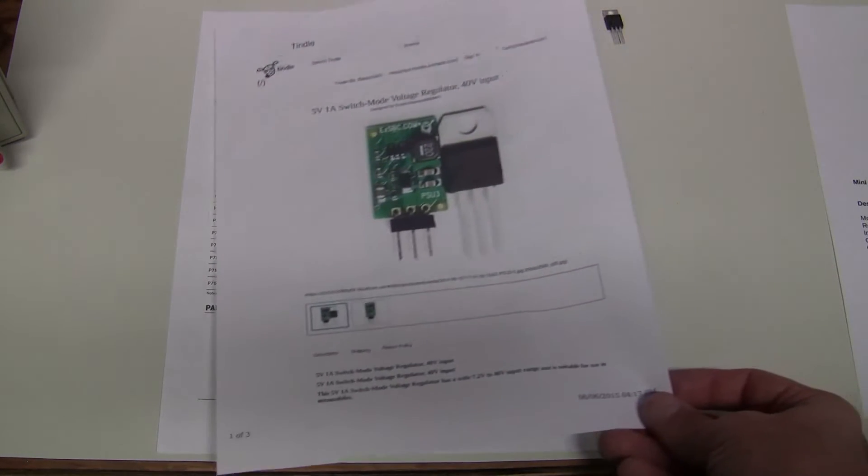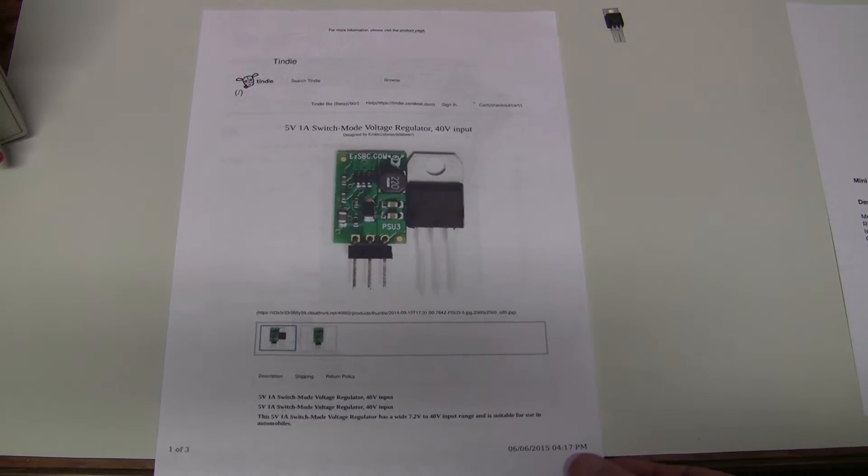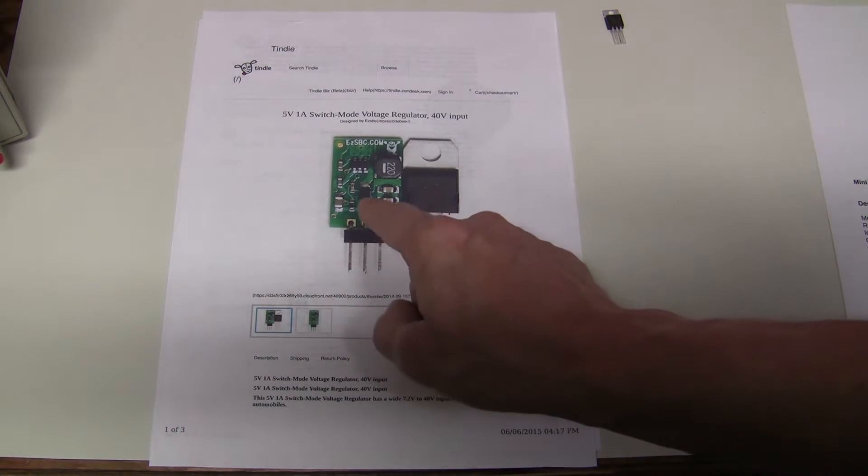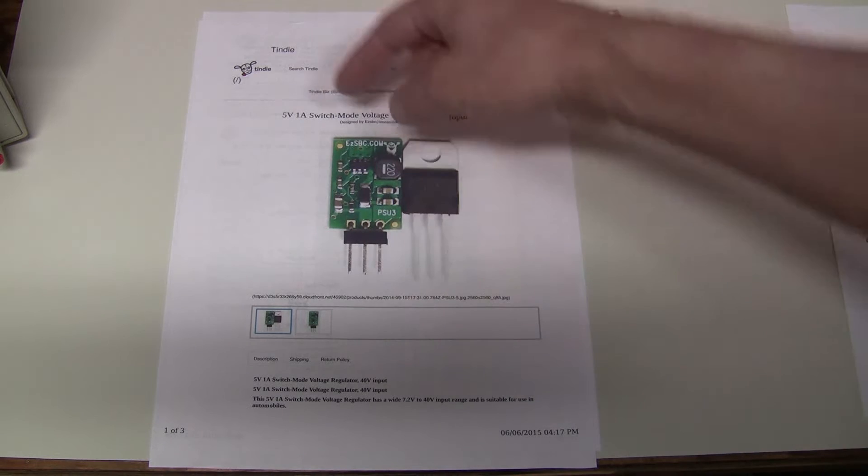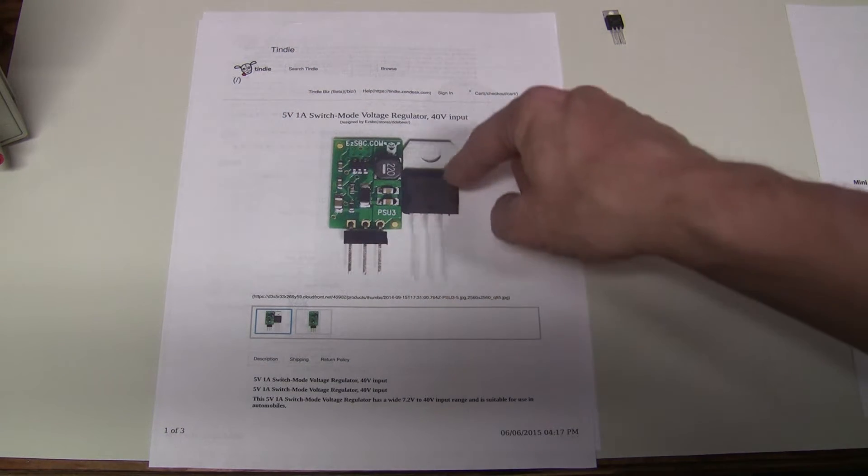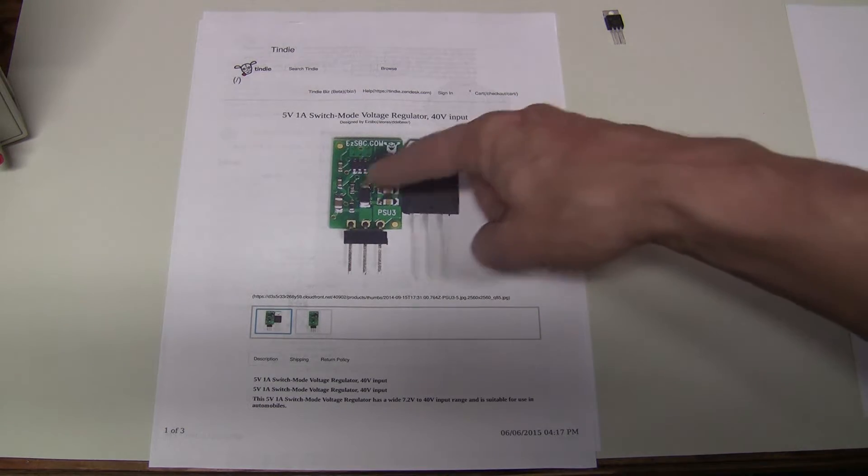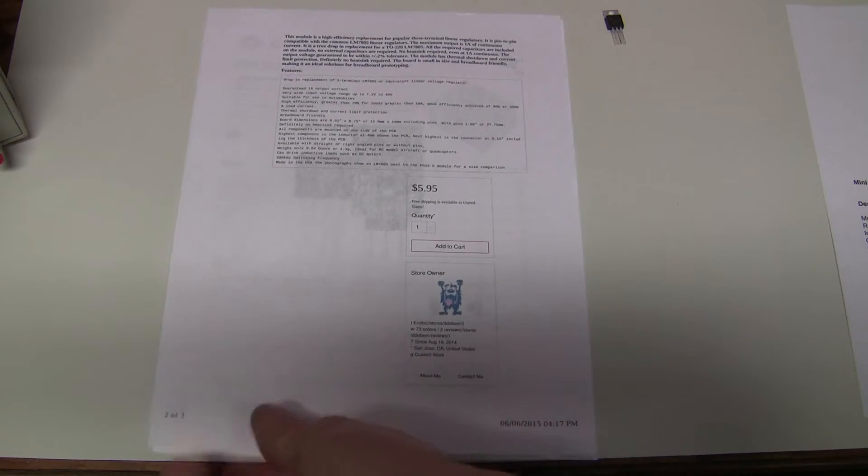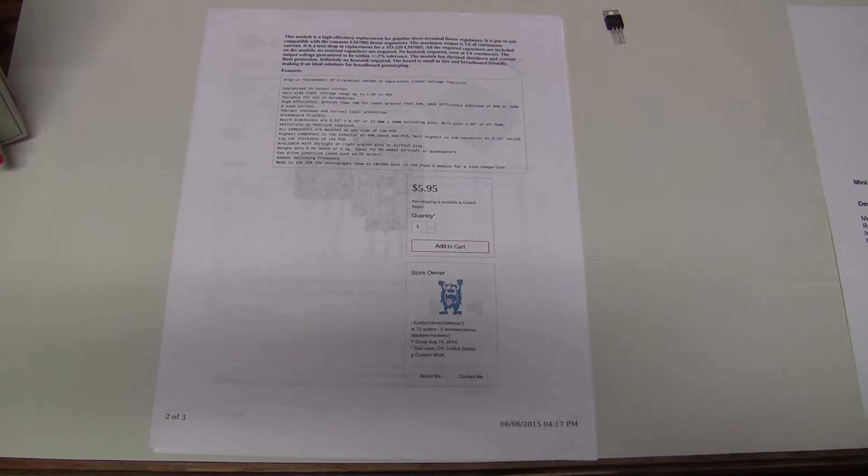Also, one of the viewers suggested this module from Tindy which is also a switching regulator. This one is 5V 1A and it's pin compatible with 7805 and very similar in size, and the cost of this is $5.95.